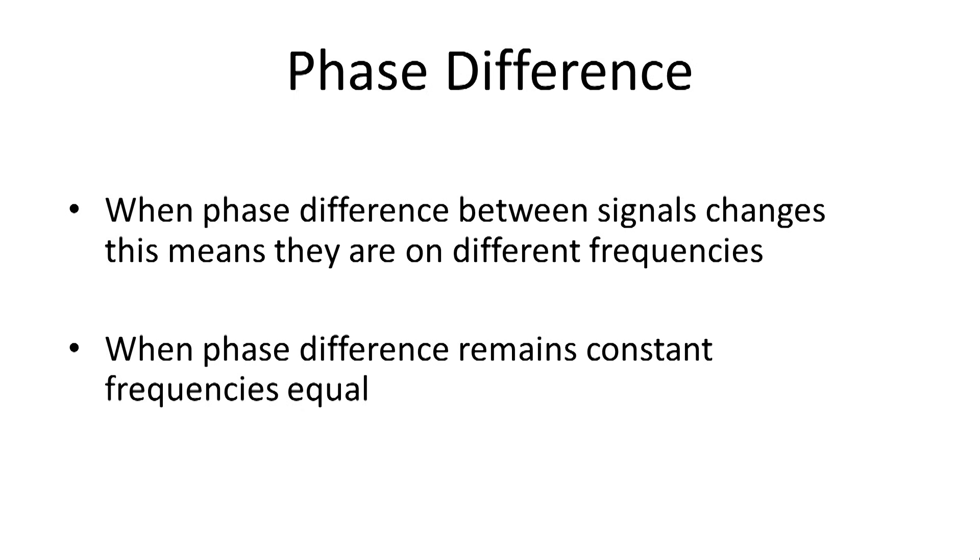Rather than taking the phase difference for two points on one waveform, phase difference can also be measured between two waveforms by taking the same point on each of the waveforms and seeing the angle between them. This phase difference may change with time, or it may remain the same.